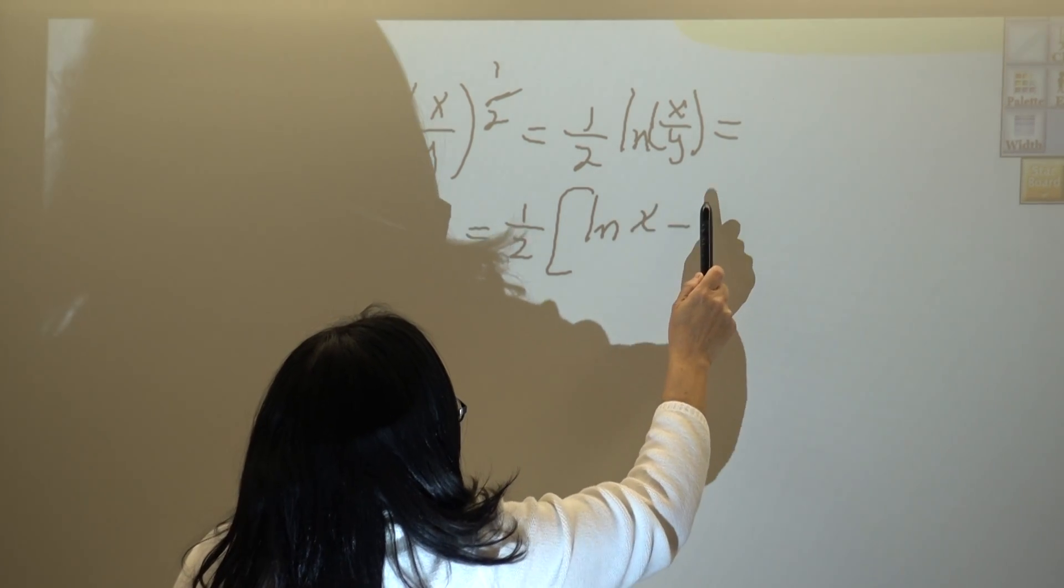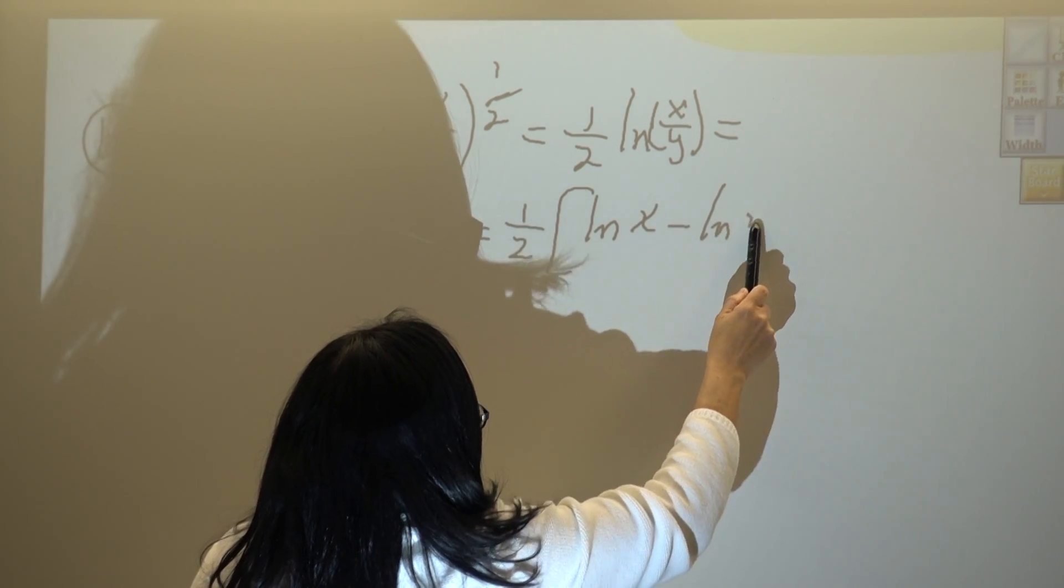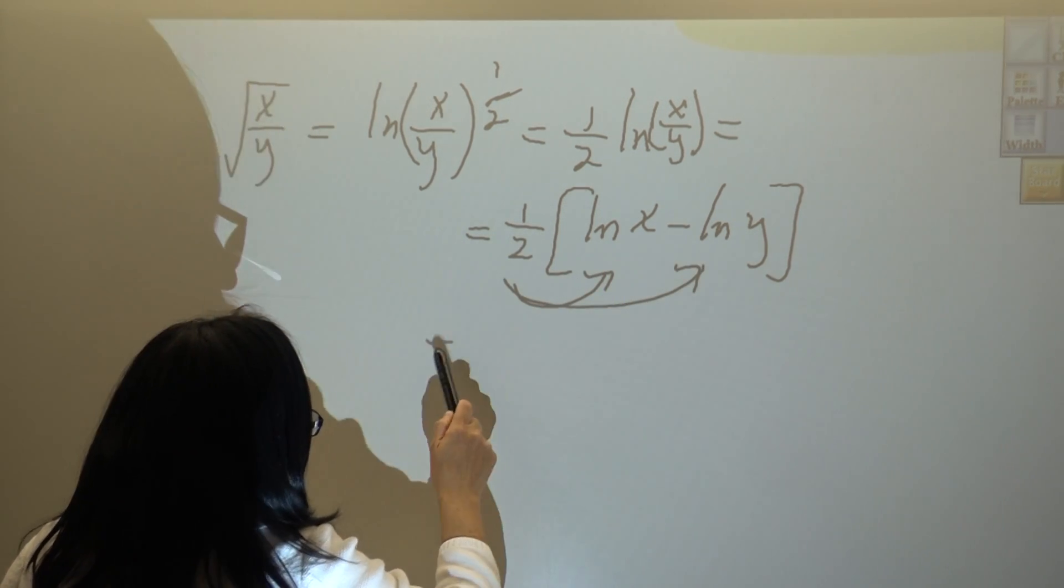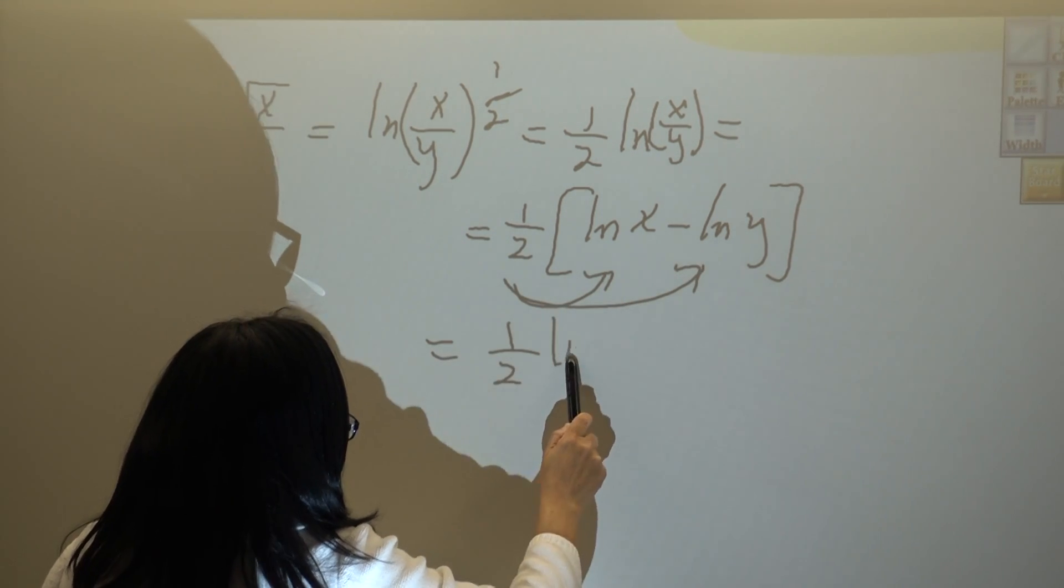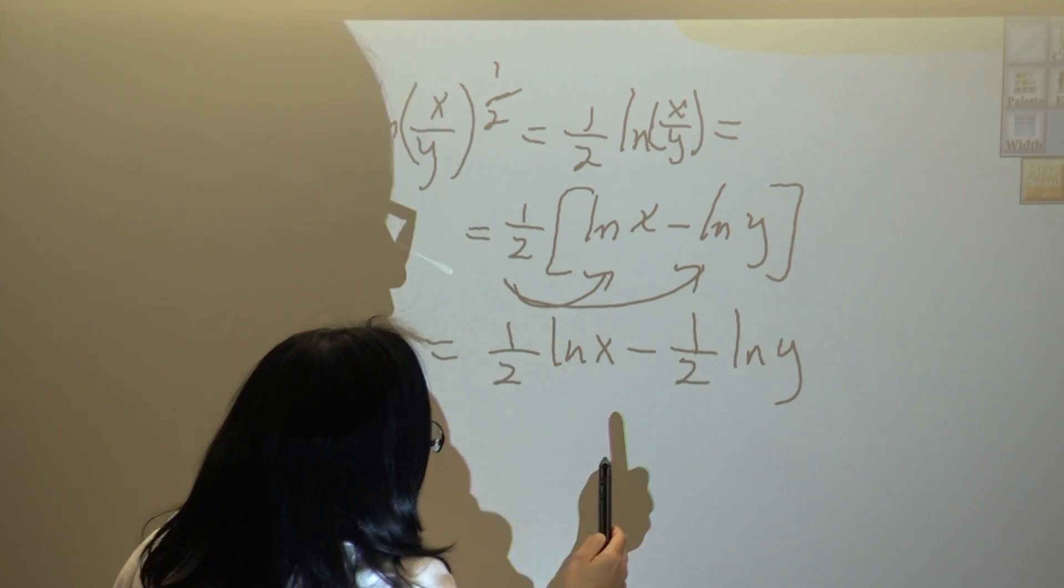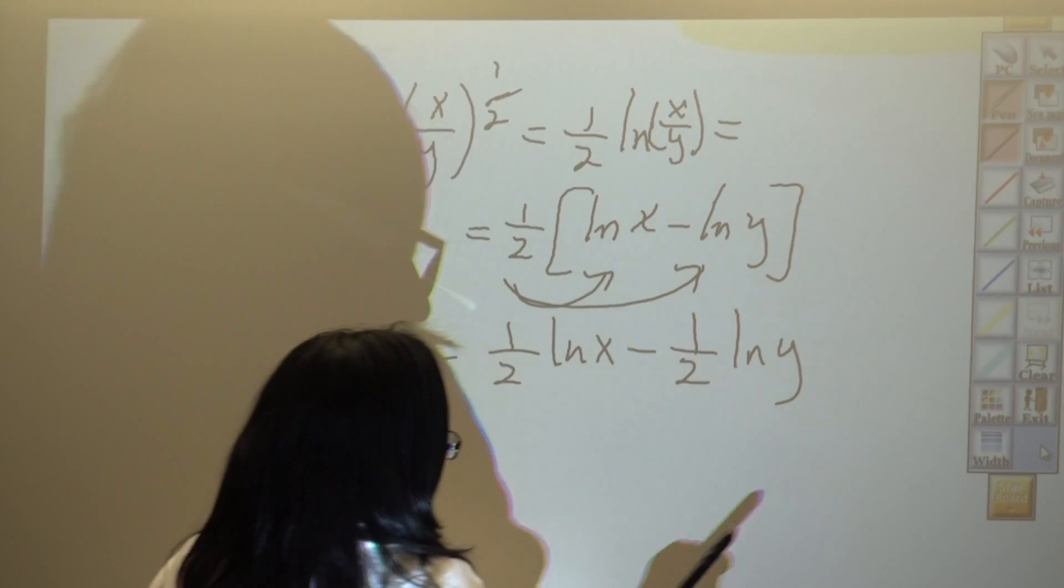Then distribute the one half: you have one half natural log of x minus one half natural log of y. That is completely expanded.